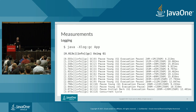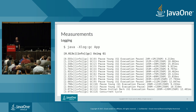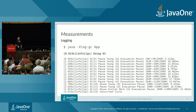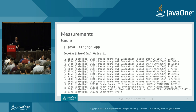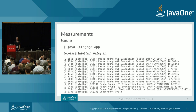As an example, enabling -Xlog:gc (default level is info) gives output where each line has decorations: a timestamp, the level (info), and the tags. Here you see only the gc tag, followed by the message. The JVM tells you that you are running with G1.